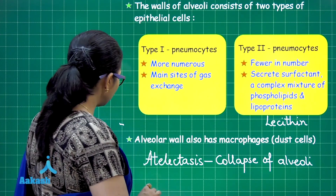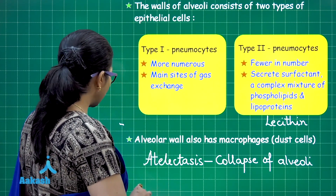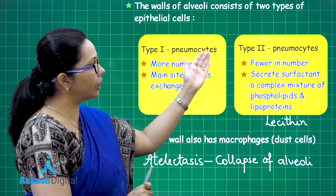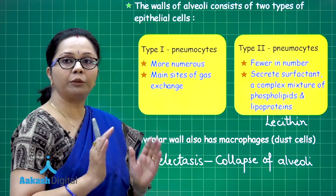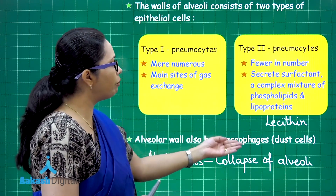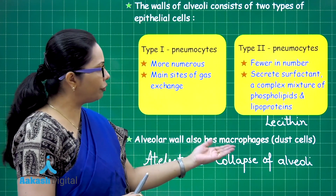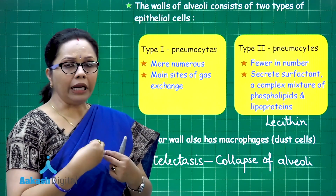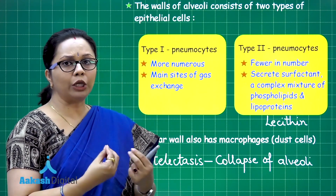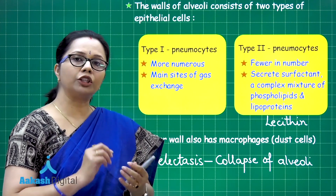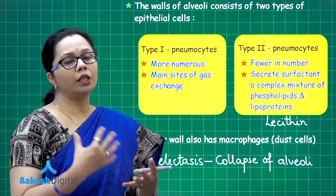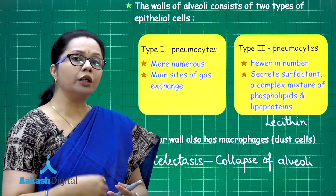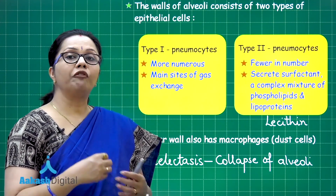The total number of alveoli in the two lungs together is around 300 million. In addition to pneumocytes, the alveoli also contain macrophages, which are called dust cells. When we inhale air, larger particulate matter is trapped in the nasal cavity itself, preventing it from entering the lungs. Very fine particles enter the tracheal passage where mucus traps them.